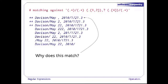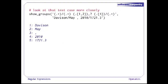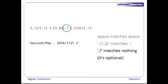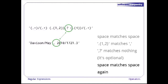Looking more closely: the groups are 'Davison', 'May', a comma on its own — which is clearly wrong — and then the right year and reading. The space after May matches the space in the pattern. The expression for one or two occurrences of any character matches the comma, because comma is a character occurring once. The comma question mark is then not matched against anything because it's allowed to match zero characters — question mark means optional. The second space then matches the second space in our data.